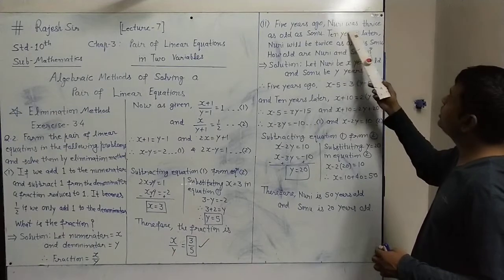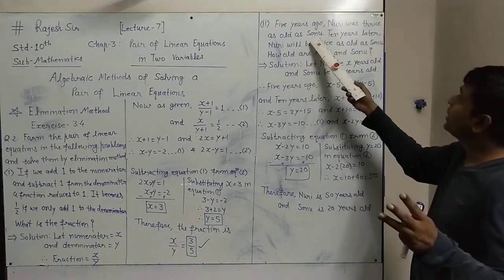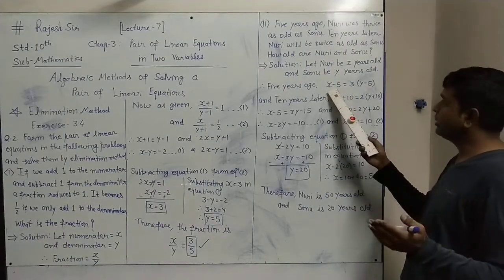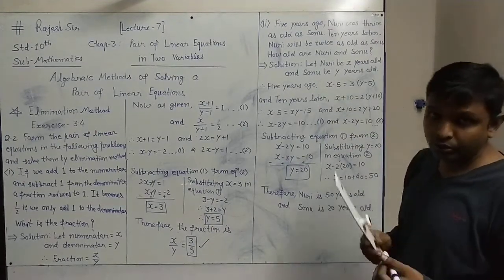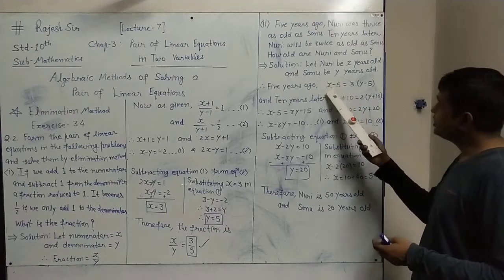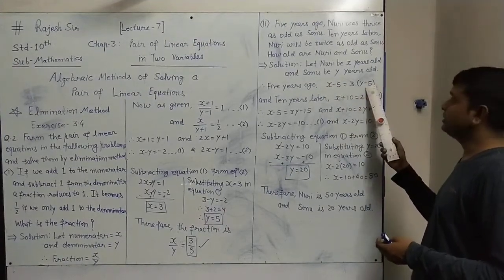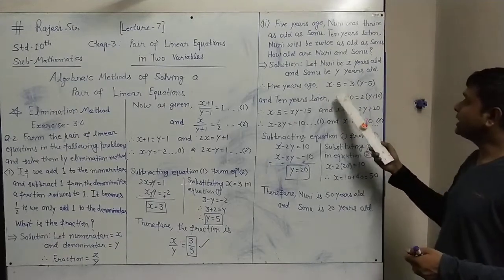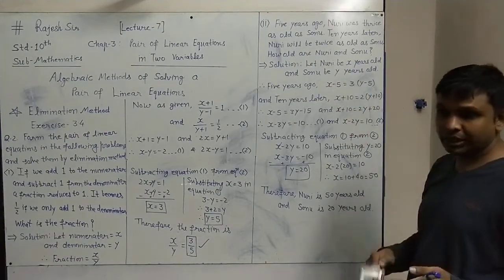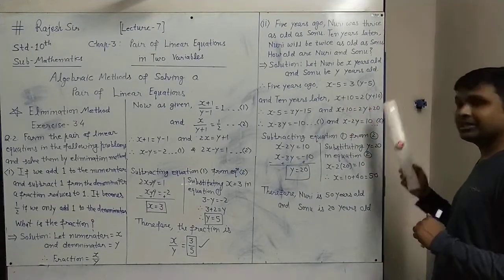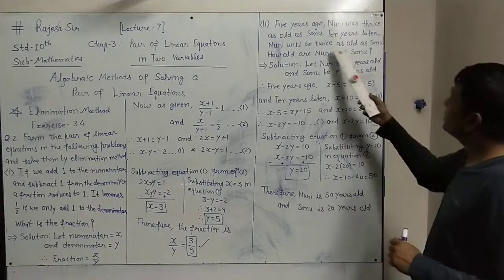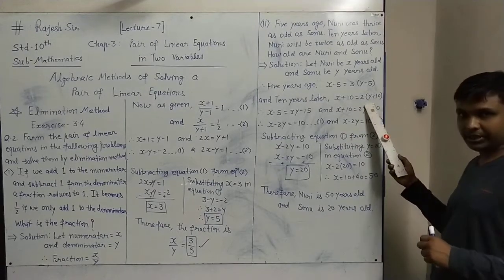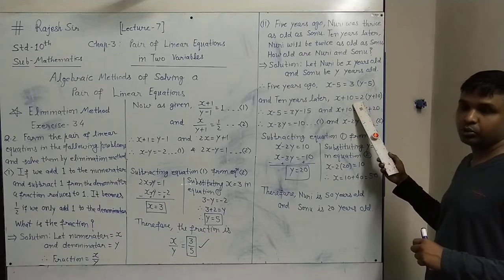The relation given: Nuri's age was 3 times Sonu's age 5 years ago, so x−5 = 3(y−5). For 10 years later, Nuri's age will be x+10 and Sonu's will be y+10. The relation is that Nuri's age will be twice Sonu's age, so x+10 = 2(y+10).